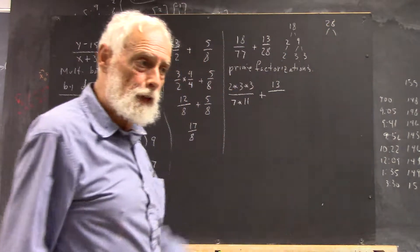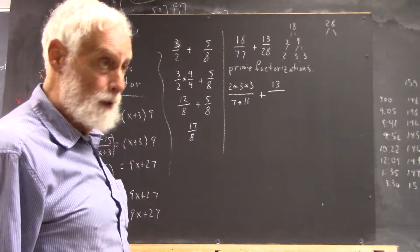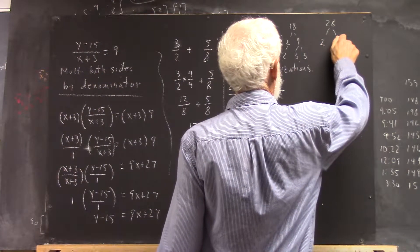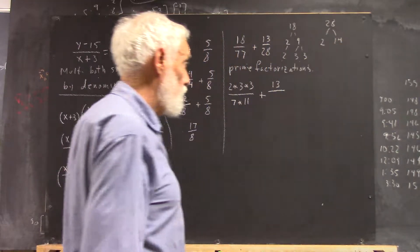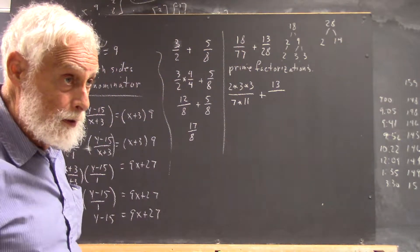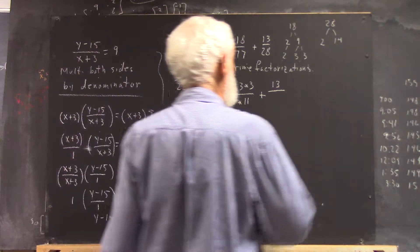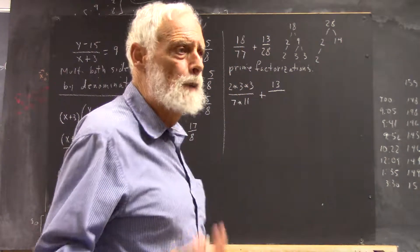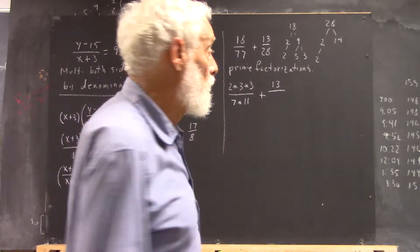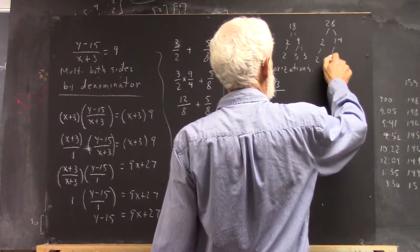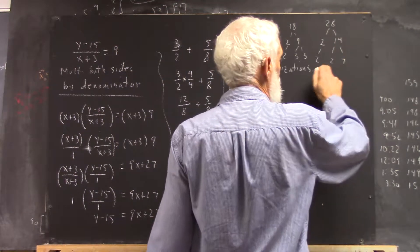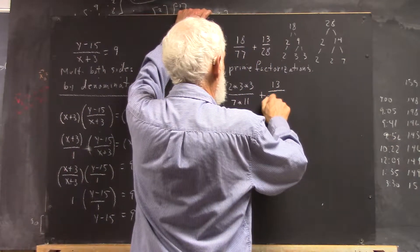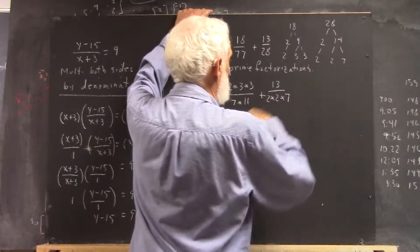What's the smallest prime that'll divide twenty-eight? Two — and of course it goes in fourteen times. Two is prime, so we're not going to do anything to it, but what about fourteen? What's the smallest prime that divides fourteen? Two — and that gives us two times seven, and now everything's prime. So now we have thirteen over two times two times seven.